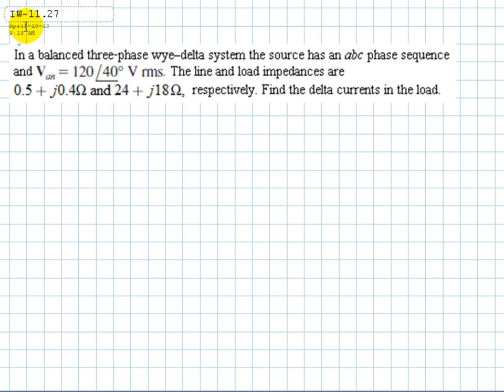This is Erwin's exercise 1127. In a balanced three-phase Y delta system, the source has an ABC phase sequence and VAN is 120 with 40 degrees.